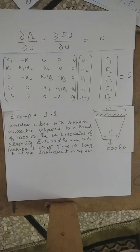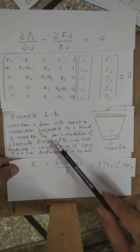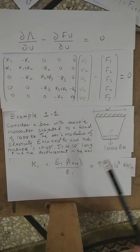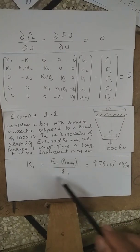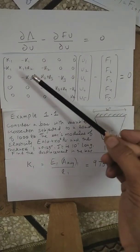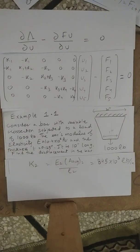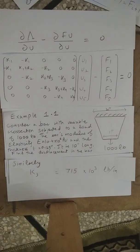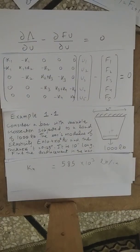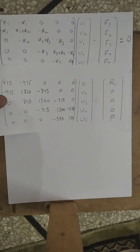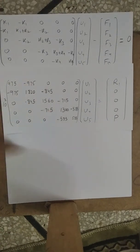In the solution phase, we calculate k1, k2, k3, and k4. We know E = 10.4 × 10⁶, we can calculate the average area for each element, and the length of one element is 2.5 inches (total length divided by four elements). Substituting these values gives us k1 through k4, which are then placed into the global matrix. Here k1 = 975.